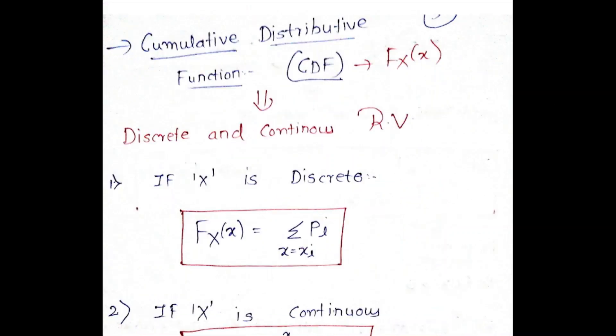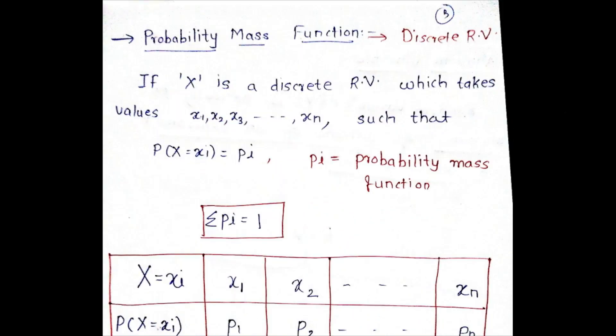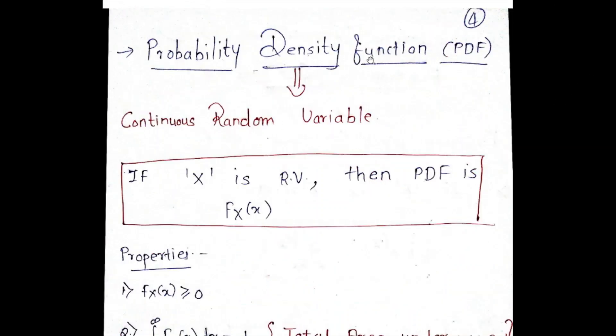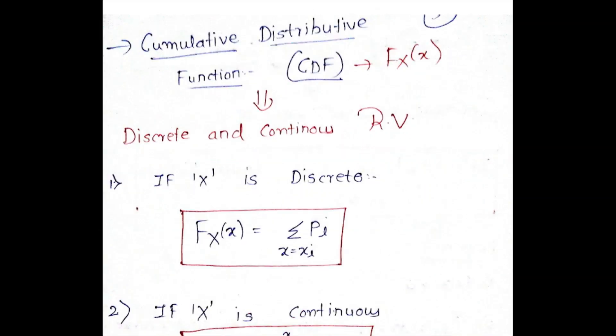As in the last class we have learned about concepts called the PMF, the probability mass function, which is basically used for discrete random variables. Then we learned about PDF, the probability density function, and CDF, the cumulative distributed function.